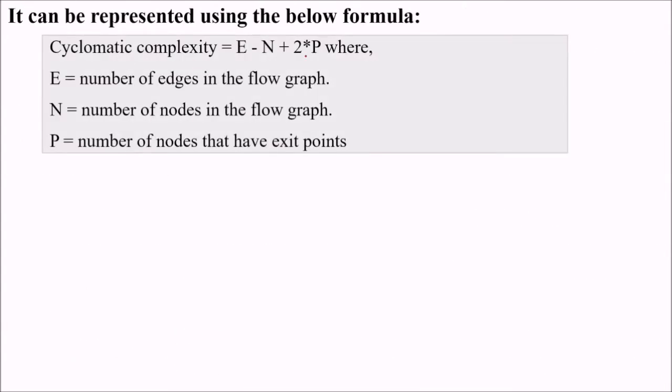It can be represented using this formula: cyclomatic complexity equals E minus N plus 2 times P. E minus N plus 2 times P. E is the number of edges in the control flow graph, N is the number of nodes in the control flow graph, and P, also known as the predicates, are the number of nodes that have exit points.